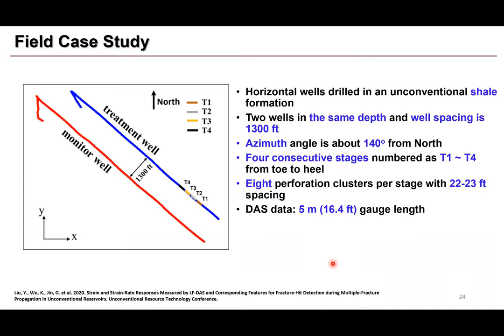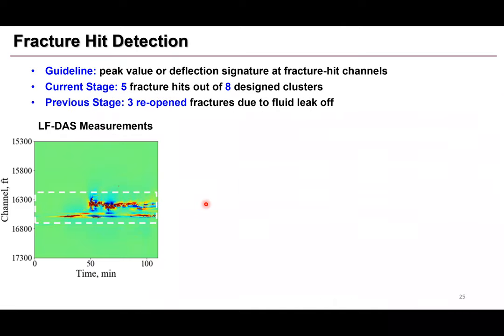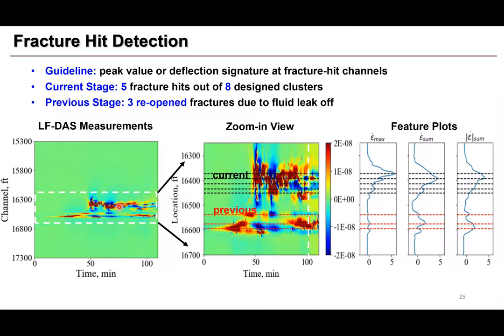Now I want to show a field application in an unconventional shale formation. The treatment well and monitor well are 1,300 feet apart, in the same depth, with azimuth approximately 140 degrees from north. We have data for four stages, each with eight perforation clusters at cluster spacing of about 22 feet. For the DAS data, the gauge length is 5 meters. We first perform fracture hit identification using guidelines from our forward model.